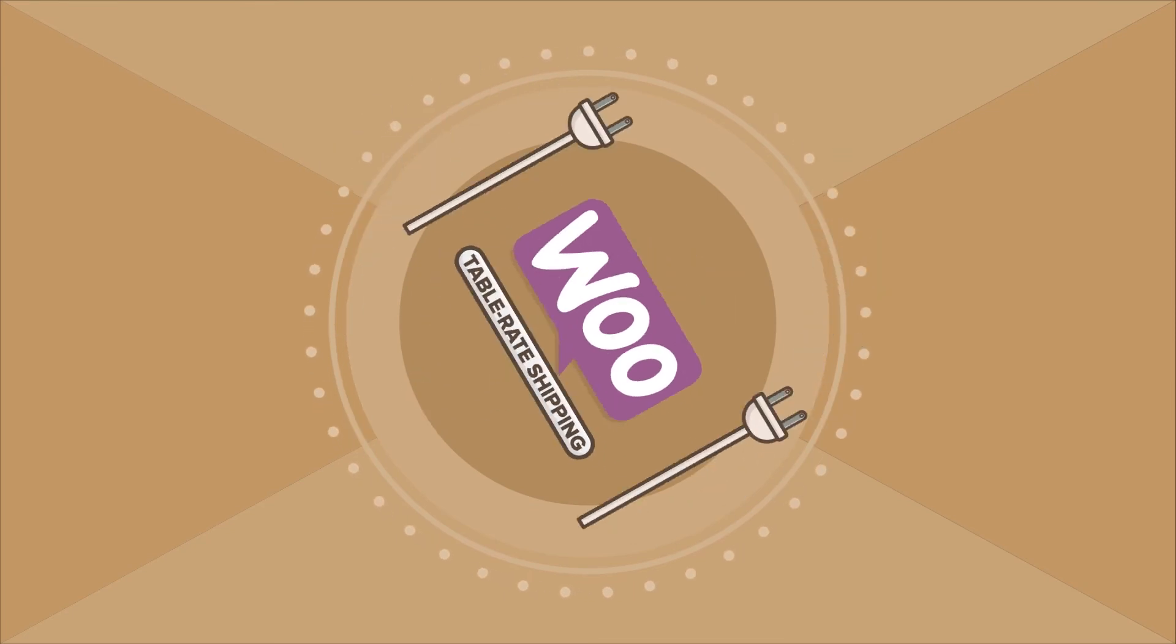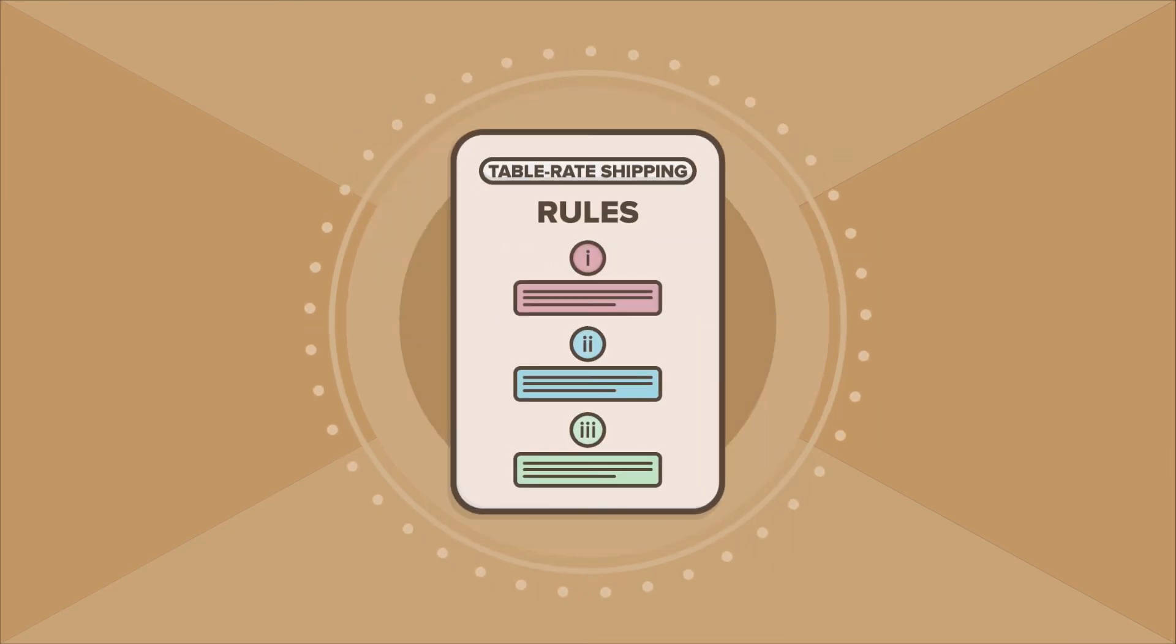Then, you'd add TableRate Shipping on top of that, and set advanced rules for each of those classes and zones. For example,